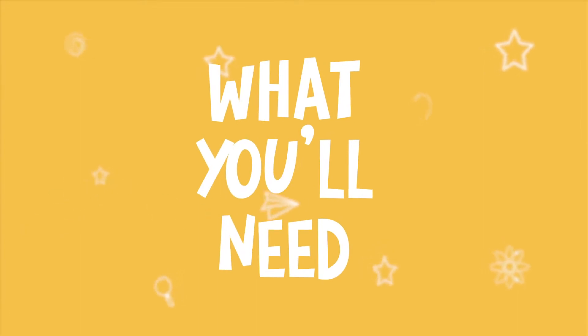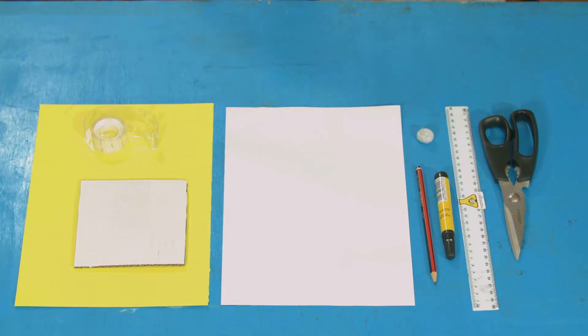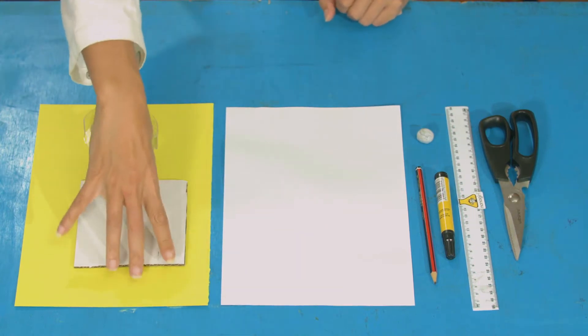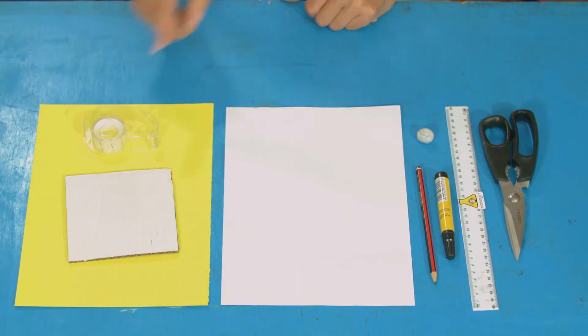For this experiment you'll need a piece of A4 paper, a sheet of card that is as long as your paper, and a smaller piece of thicker card. Tape, some Blu-Tac, a pencil, a marker pen, ruler, and some scissors.